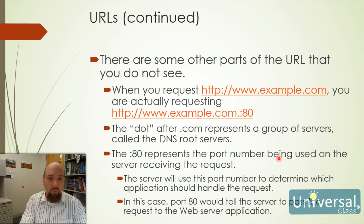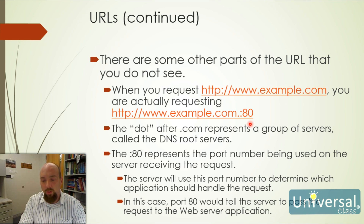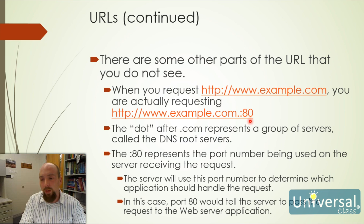There are other parts you don't normally see. When you type www.example.com, your browser fully qualifies it to something like HTTP colon forward slash forward slash www.example.com dot colon 80. The dot is the root of the DNS namespace, telling the browser this is the end of the domain name. The colon specifies that the following number is the port number, used by the receiving computer to determine what application processes the request. Port 80 is typically HTTP, going to the web server application.